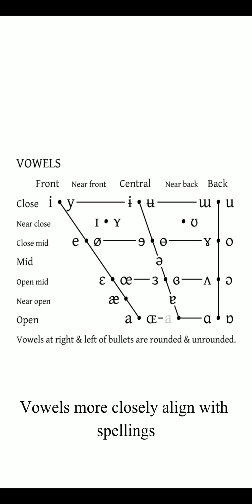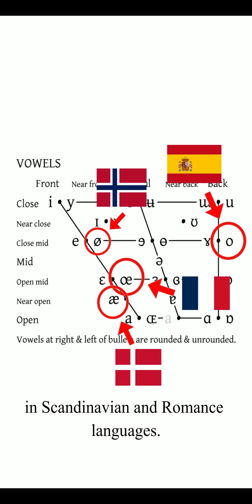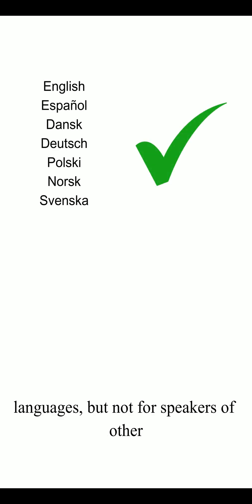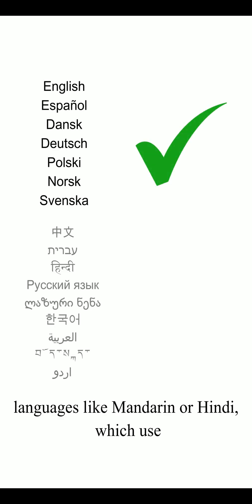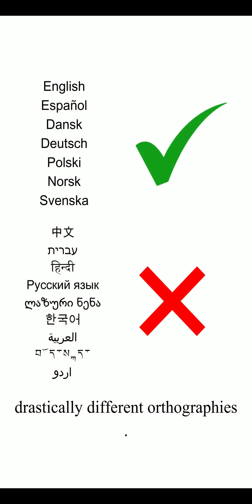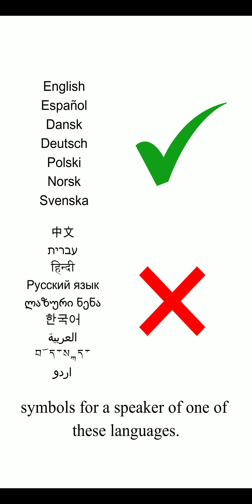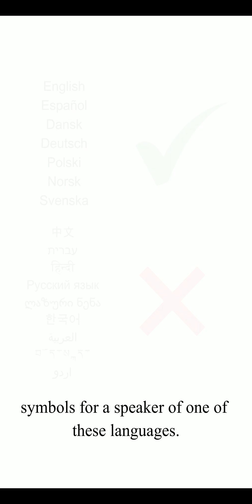Vowels more closely align with spellings in Scandinavian and Romance languages. One of the other flaws of the IPA is that it's optimized for speakers of European languages, but not for speakers of other languages like Mandarin or Hindi, which use drastically different orthographies. This can make it hard to memorize IPA symbols for a speaker of one of these languages.